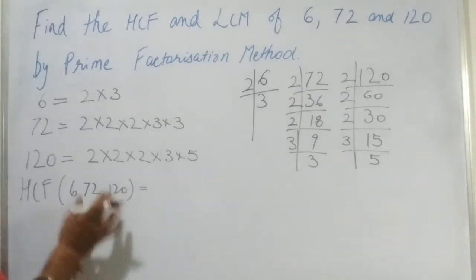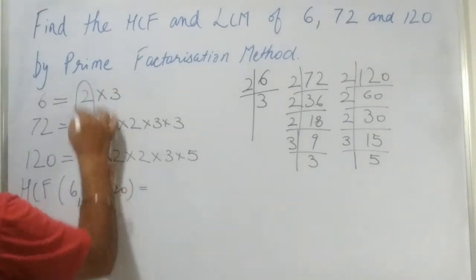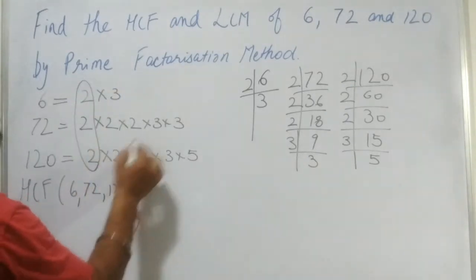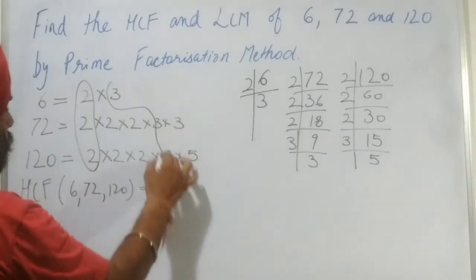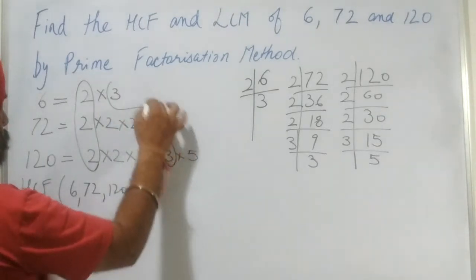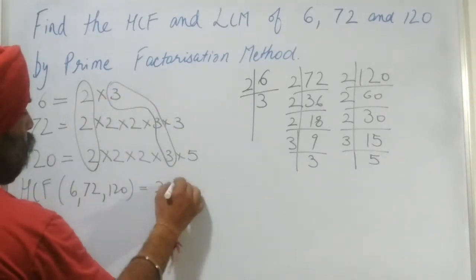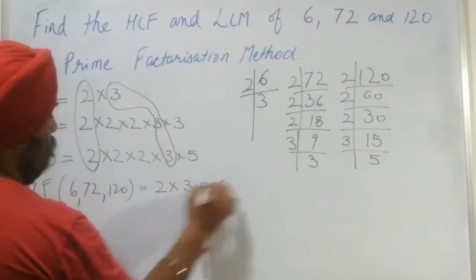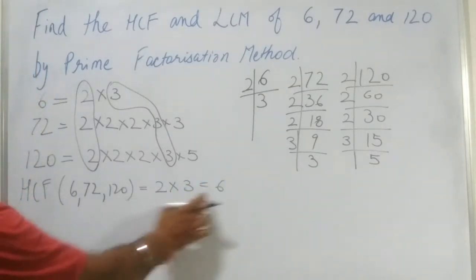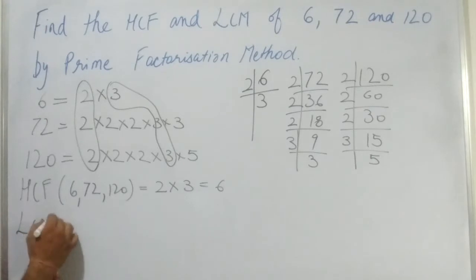We identify the common factors across all three numbers. The common factors are 2 and 3, so HCF = 2 × 3 = 6. The HCF of these three numbers is 6.